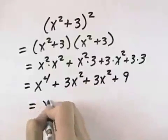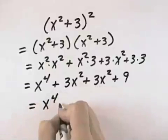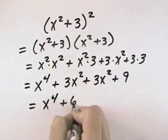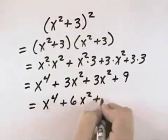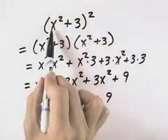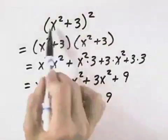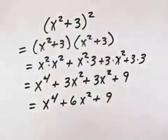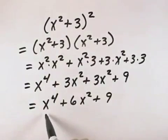So that gives us x to the 4th. And 3x squared plus 3x squared, well 3 plus 3 is 6, so that's 6x squared plus 9. This gives us the first term squared plus twice the product of the two terms plus the last term squared. So our result is x to the 4th plus 6x squared plus 9.